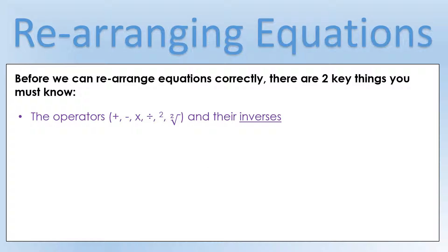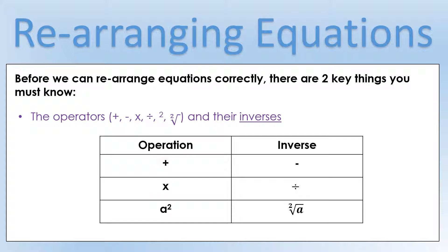Now let's look at operators and their inverses. This isn't an exhaustive list, but these are the most common ones. Plus and minus are inverses of each other. Times and divide are another set of inverses — they do the opposite to each other. Squaring and square rooting do the opposite. We could also add cube and cube rooting. In more advanced physics, taking the exponential and taking the log are opposites, but these are our basic ones.